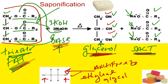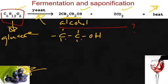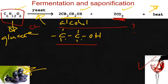So once again, fat plus base gives us glycerol and salt — that's called saponification, which produces soap. Fermentation produces alcohol, and typically the alcohol in question is ethanol. Carbon dioxide is also produced in fermentation, and yeast is our catalyst. Hard work plus sacrifice equals success — I hope this video was helpful, take care.